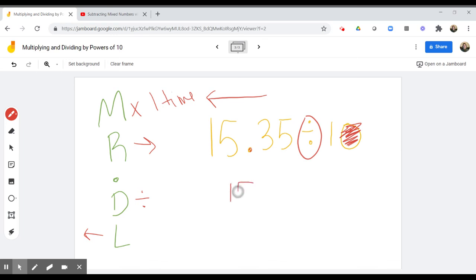So what is that going to look like? Well, I have my 15 and 3,500 ten-thousandths. I need to move that decimal one place to the left. So its new home is now between the digit one and digit five. And so my final quotient is going to be 1 and 535 thousandths.